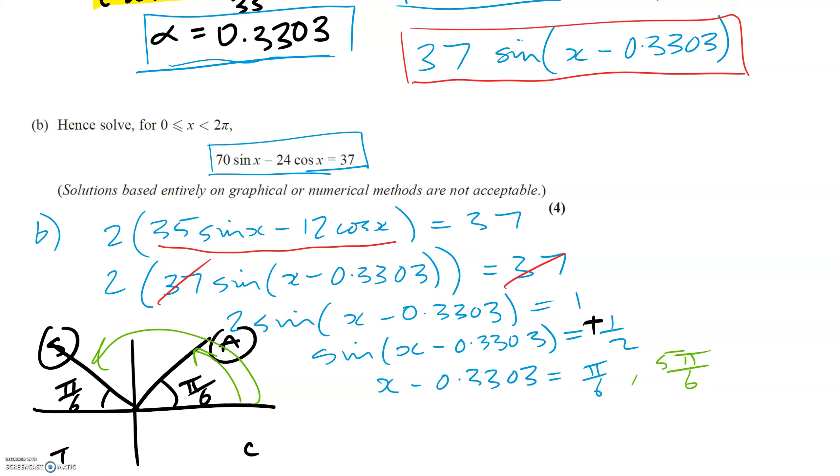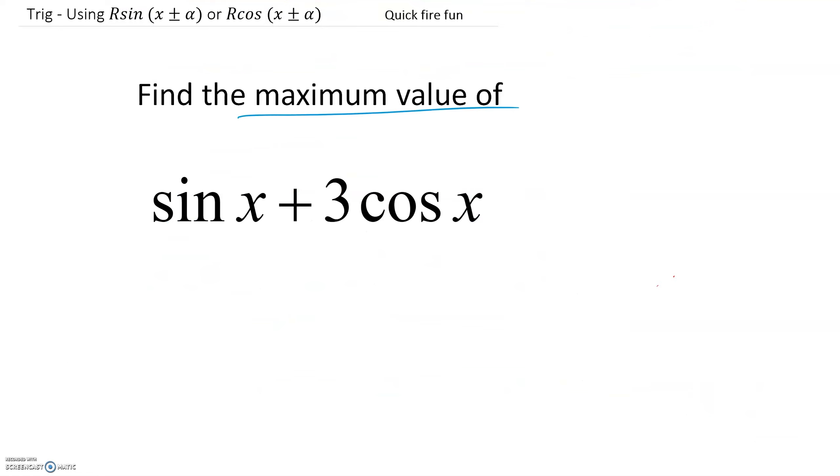So 5 pi over 6. I think that's all we need in our range. So then if we just add 0.3303 to both of those, we will get the answer hopefully, which is 0.854 and 2.95. Those are both to three significant figures. Didn't tell us what to round to in part B, so three significant figures is usually fine. Now, before we do part C, where we've got to find a minimum value, it might be quite helpful to look at some examples.